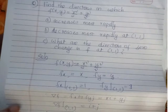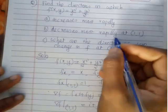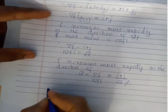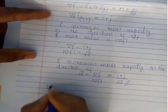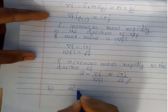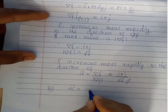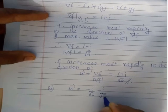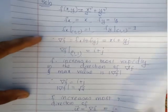In which direction does f decrease most rapidly? The answer is in the direction of -∇f, which gives the unit vector u = -i/√2 - j/√2, that is the direction opposite to ∇f.